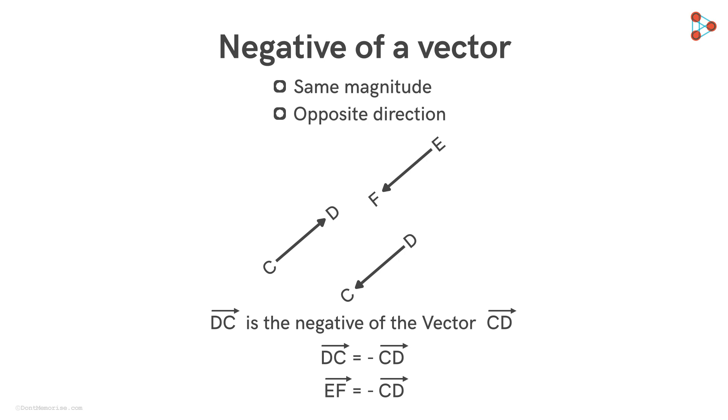Yes, the magnitude of vector EF is the same as that of vector CD. And its directed in the opposite direction to that of vector CD. So vector EF will be the negative of vector CD.